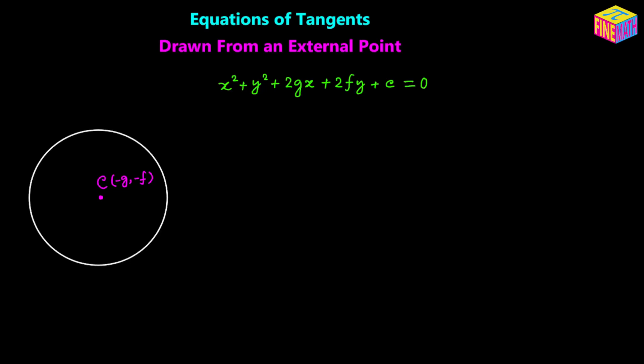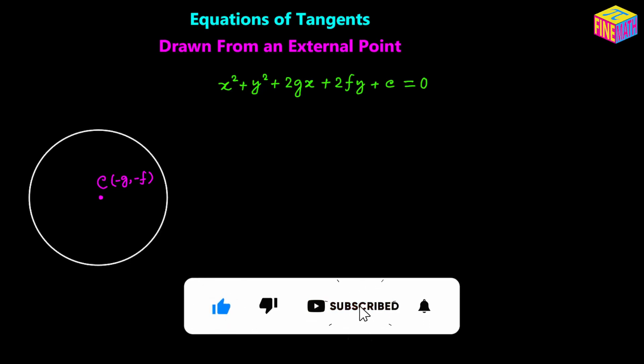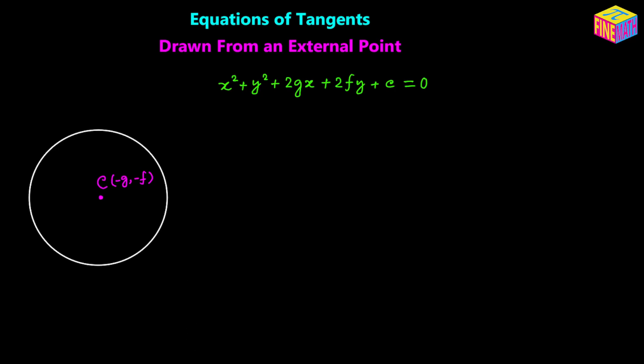Let's suppose we have a circle whose center is at negative g comma negative f, and the equation of the circle is x squared plus y squared plus 2gx plus 2fy plus c equals 0 — that's the general form. Now let's suppose we have an external point P with coordinates x sub 1 comma y sub 1. From this point we can draw two tangent lines — one to the left and one to the right — with points of contact A and B respectively.